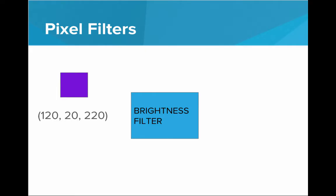For example, let's look at a brightness filter. This is something that we commonly see with digital images - we want to make an image brighter. We can do that with a brightness filter. Let's say we had a pixel with the RGB value 120, 20, and 220.